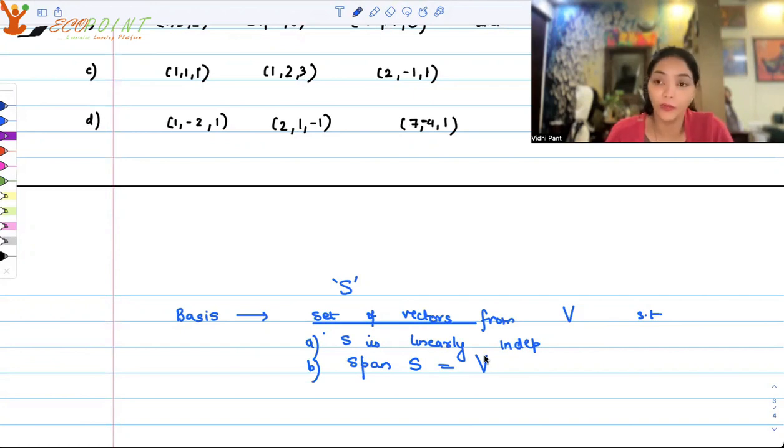So out of these, which is that set of vectors which can generate the entire W, which is a subspace of R³?